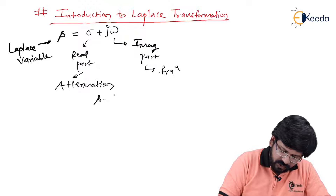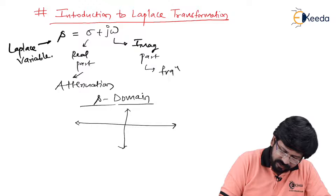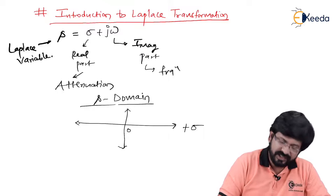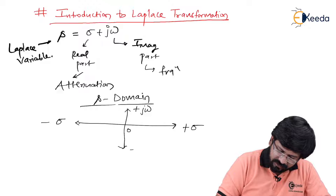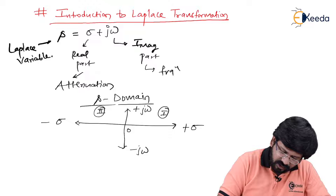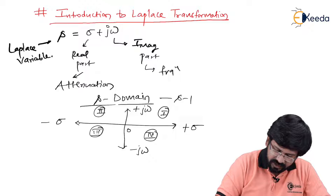We should also know something called the S domain. The S domain is a four-quadrant system which has positive sigma on the positive x-axis, negative sigma on the negative x-axis, positive j omega on the positive y-axis, and negative j omega on the negative y-axis — forming the first, second, third, and fourth quadrants. This is what we call the S domain, also called the Laplace domain, or more precisely the S plane.